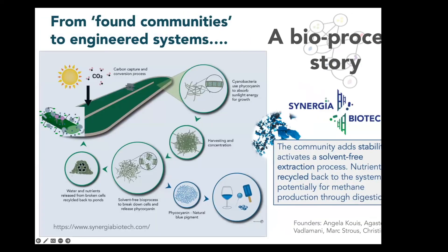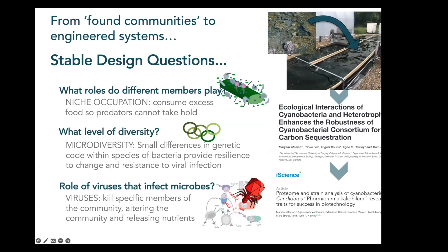This natural blue pigment is produced by the cyanobacteria, and the community acts to stabilize the environment. Once the phycocyanin is harvested through a solvent-free extraction process, the remaining biomass can be used as nutrients fed back into the raceway ponds, or potentially digested for methane production through anaerobic digestion. All in all, this is a carbon-neutral process.